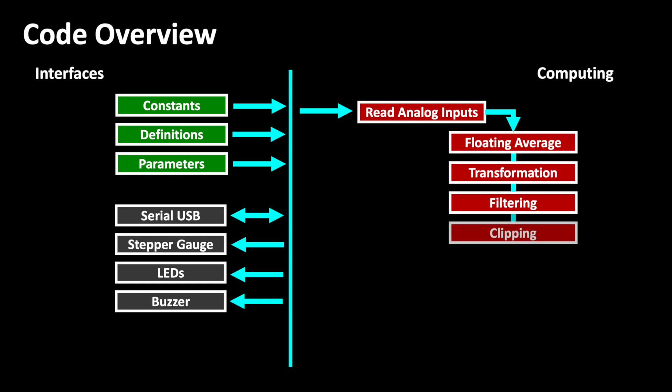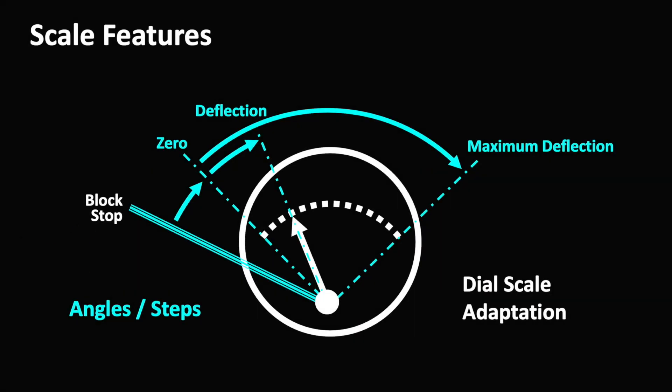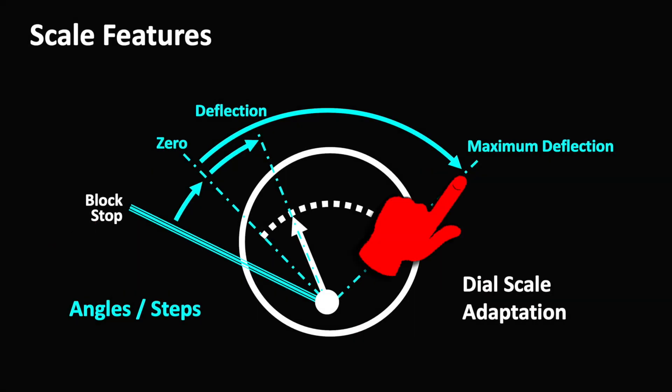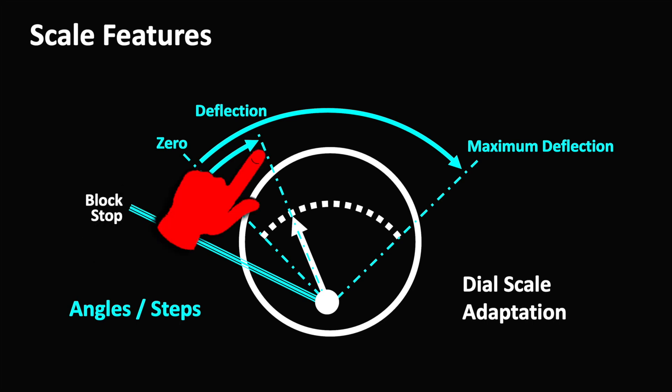After clipping, the actual stepper control is getting active. When switching on, a start-up procedure drives the stepper to the internal blocking, then to the maximum deflection and then to zero before measured values are displayed.